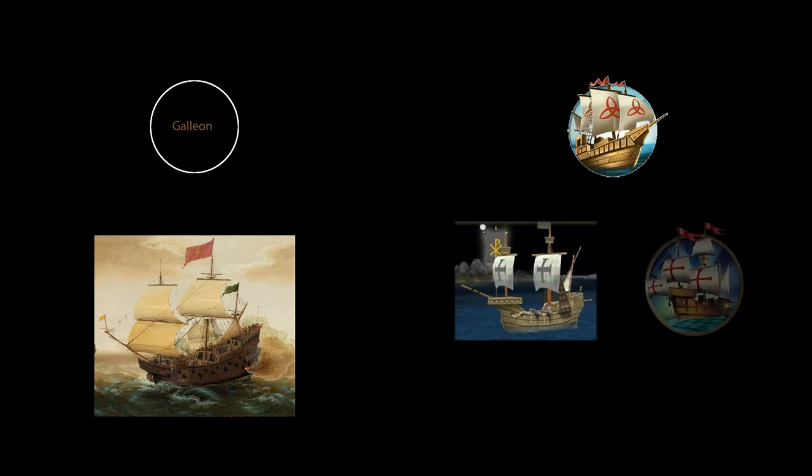In the unit texture files, there are only two icons pointing to unused units. The first is a placeholder icon for a unit called the Galleon, a medieval-era warship, possibly a sea unit or unique unit for a civilization. The second resembles the Carrack from Civilization IV and the Nao from Civilization V's Brave New World DLC, suggesting these may have been unique features of a potential Portuguese civilization in the base game that was cut.